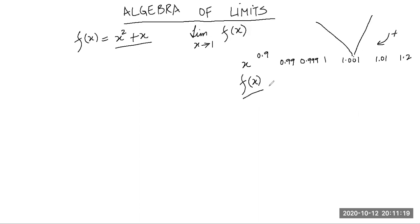So then we see f(x). When we come from the left-hand side, we're not going to find the value of the function at 1 — we want to guess this by limits. When x = 0.999, the value is 1.997001. When x = 0.99, it's 1.9701. When x = 0.9, it is 1.71.